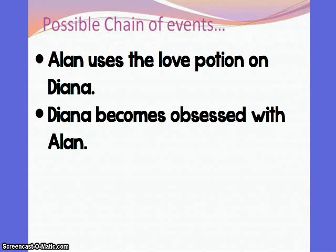Now that you've brainstormed, you should have a possible chain of events of future story events that might have occurred past the ending of the story. Your chain of events might begin like the one on the screen — you might have first written down that Alan uses the love potion on Diana, and then thought that after using the love potion, Diana becomes obsessed with Alan. After that point, there might be many different predictions for things that could happen.